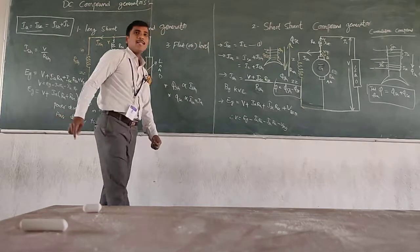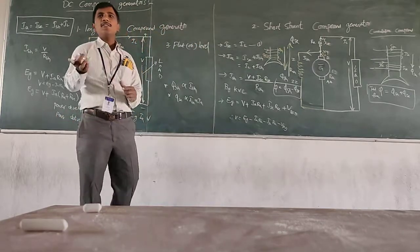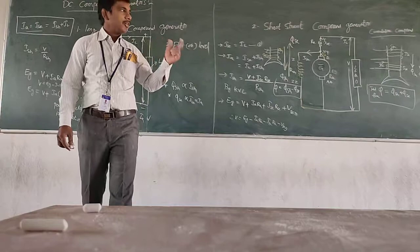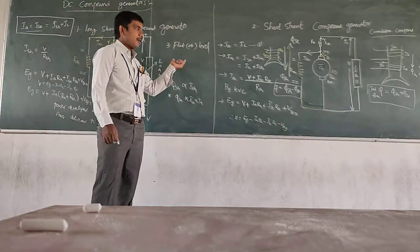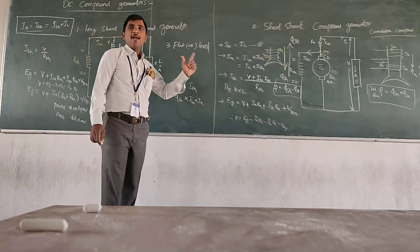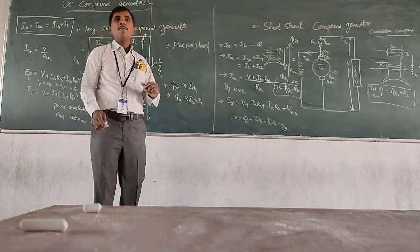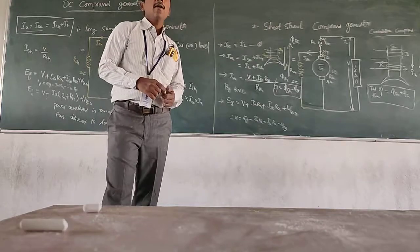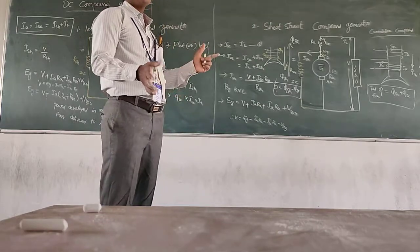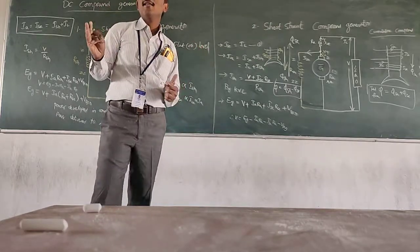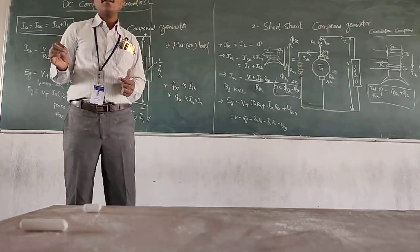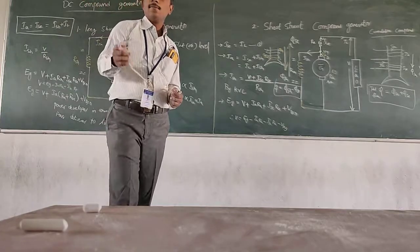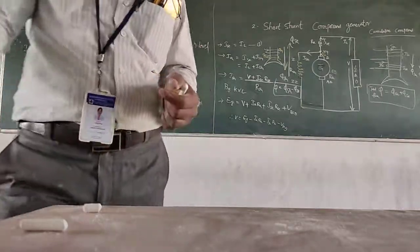In cumulative compound, net total flux equals phi_sh plus phi_sc. In differential compound, total flux equals phi_sh minus phi_sc. The third type is flat or level compound, where any one flux can vary but the total flux remains constant. Next, we move on to numerical problems based on shunt, series, and compound generators.